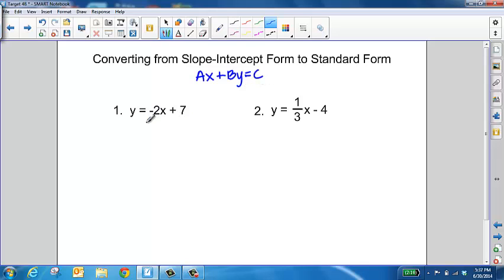If we look at example 1, we have y equals negative 2x plus 7. What we need to do to convert this into standard form is move this negative 2x to the other side of the equal sign.